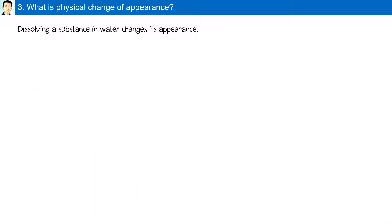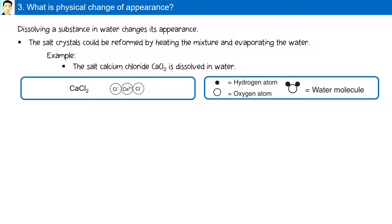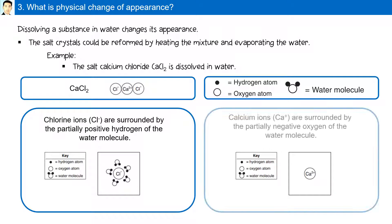What is a physical change of appearance? Dissolving a substance in water changes its appearance. Salt crystals could be reformed by heating the mixture and evaporating the water. For example, calcium chloride dissolved in water: the calcium ion is bonded to two chloride ions, while a water molecule has two hydrogen atoms bonded to an oxygen atom. The chloride ion is surrounded by the hydrogen of the water molecule, while the calcium ion is surrounded by the partially negative oxygen of the water molecule.